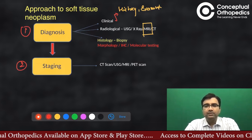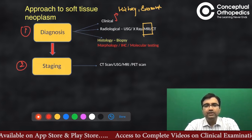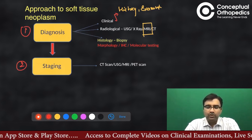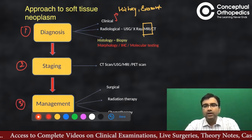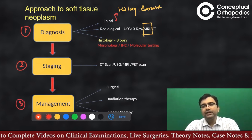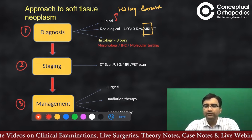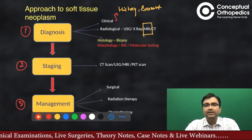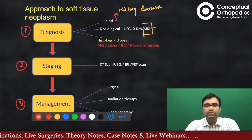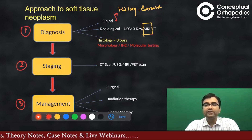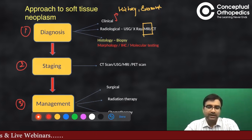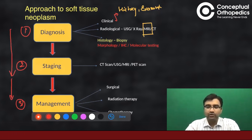Once your complete diagnosis workup is done and you know the stage, only then do you plan the treatment. Broadly speaking, for soft tissue sarcomas, surgery is always the standard of care where you remove the tumor. But the neoadjuvant or adjuvant role of radiation and chemotherapy is very important, and that is decided once you have followed this proper protocol of diagnose, stage, and then plan your treatment.